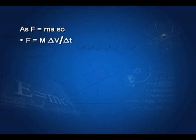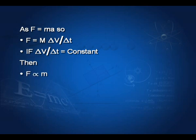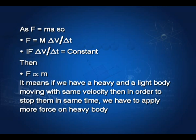Since f equals ma, we get f = m·Δv/Δt. If Δv/Δt is constant, then f is directly proportional to the mass of the body. This means if we have a heavy body and a light body moving with the same velocity, we have to apply more force on the heavier body to stop them in the same time. For example, if a truck and a bicycle are both moving with the same velocity and we have to stop them in the same time interval, we will have to apply more force on the truck.